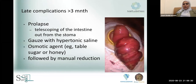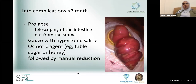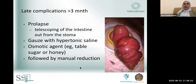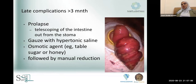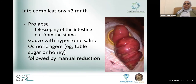A late complication is prolapse — telescoping of the intestine out of the stoma, sometimes causing ulceration due to pressure. If at home, instruct the patient to apply an osmotic agent like table sugar or honey. In hospital, apply a gauze with hypertonic saline and manually reduce it. If manageable conservatively, continue that approach. If causing stoma ulceration or obstruction that is severe, a surgical revision may be needed. The first step is always conservative.